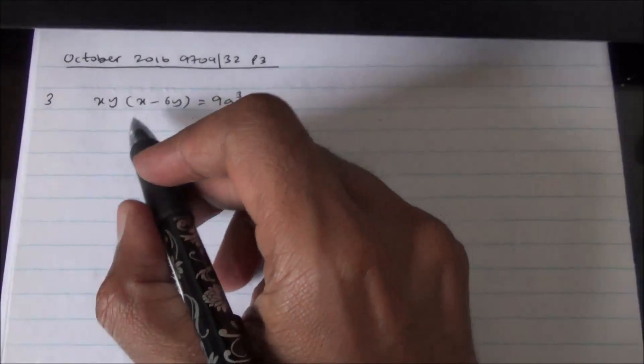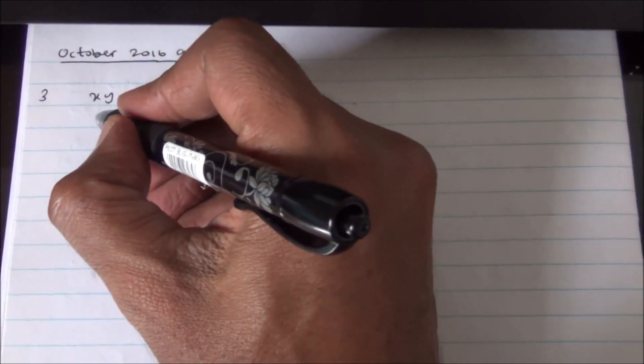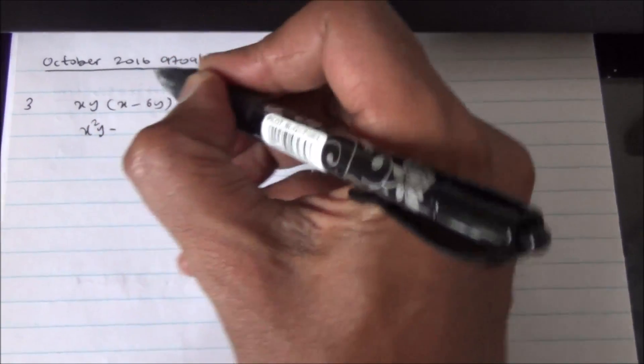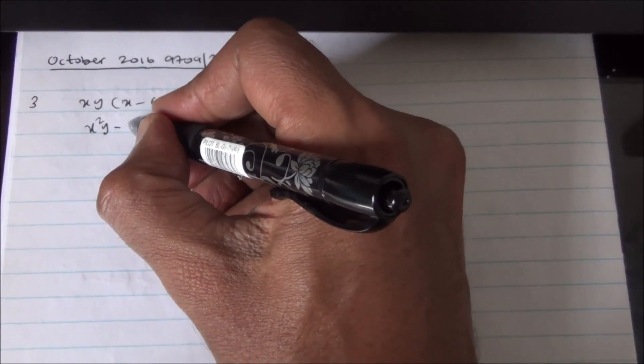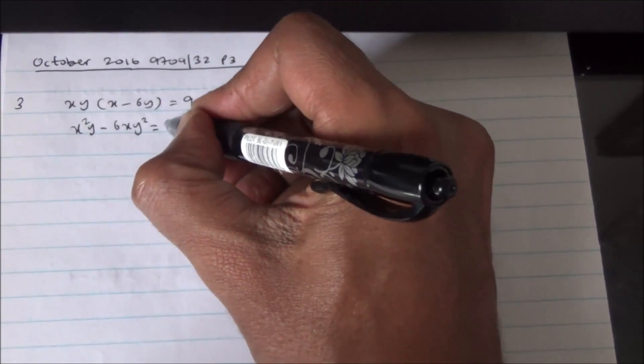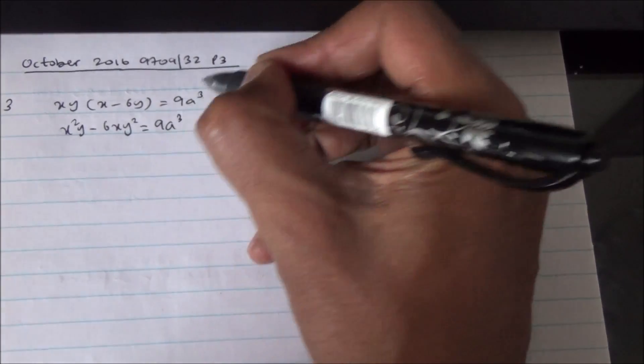Now then, this is the equation, and we can expand it. So, xy times x is going to be x squared y, minus xy times 6y is going to be minus 6xy squared, and all of that is going to give us 9a cubed.